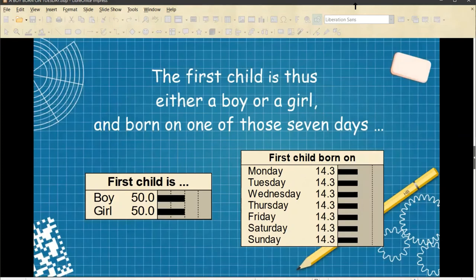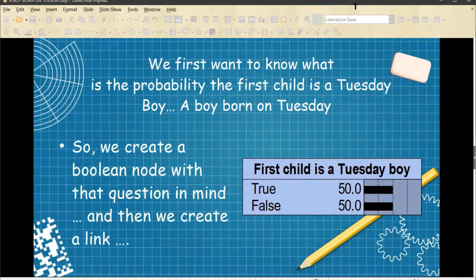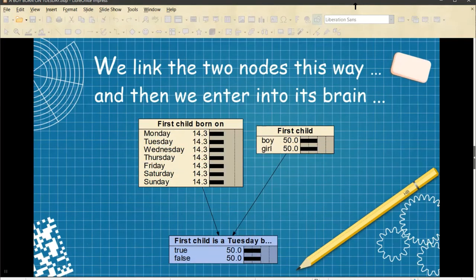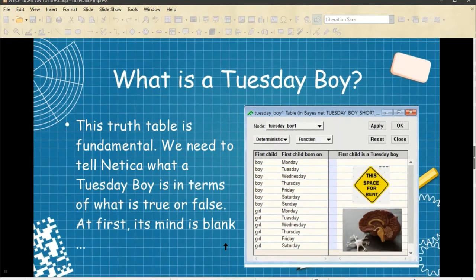The first child is thus either a boy or a girl, and born on one of those seven days. We first want to know, what is the probability the first child is a Tuesday boy, meaning a boy born on Tuesday? As far as Nereka, my Bayesian calculator, is concerned, the first child is a Tuesday boy is either true or false. So we create a Boolean node with that question in mind, and we create a link. We link the two nodes this way, and then we enter into its brain. The way we read this is, if this is true to some degree, and this is true to some degree, then this is going to be true to some degree.